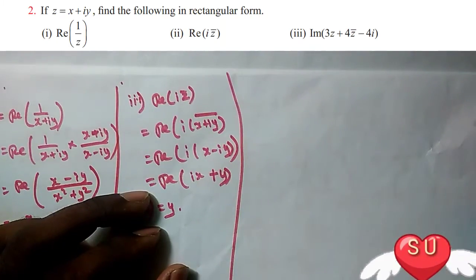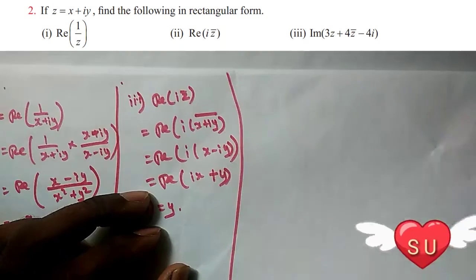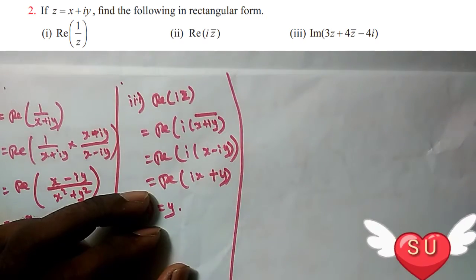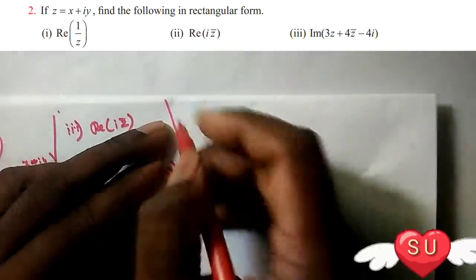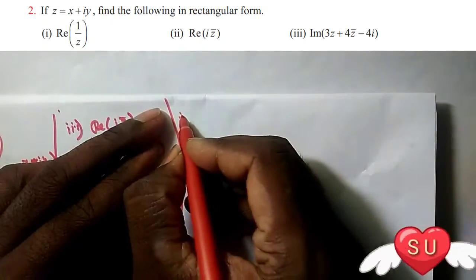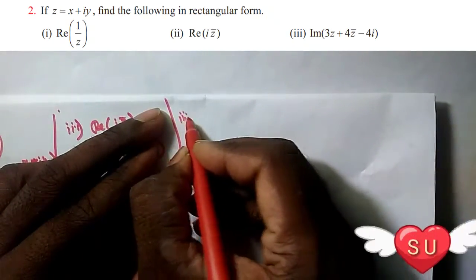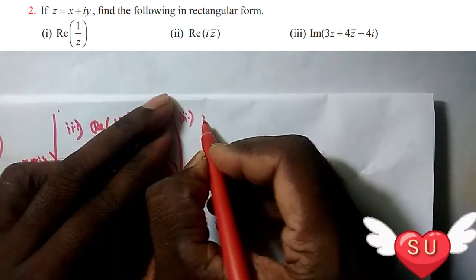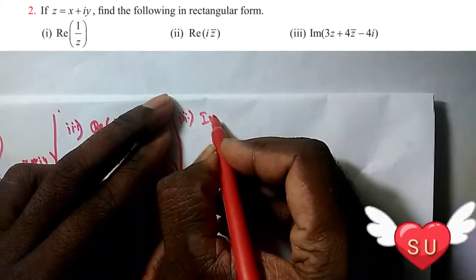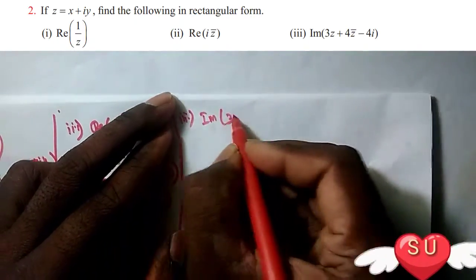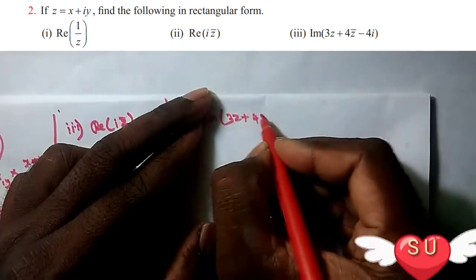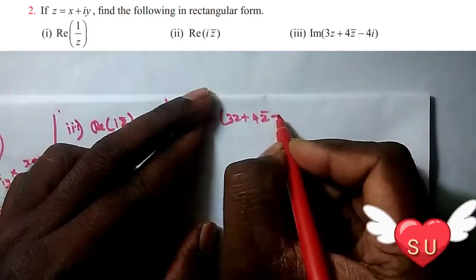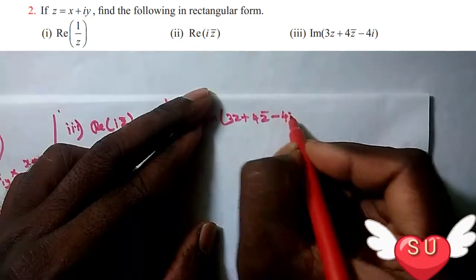Next, find the imaginary part. The third sum: imaginary part of 3Z plus 4Z̄ minus 4i. We need to find it. So, imaginary part of 3Z plus 4Z̄ minus 4i.